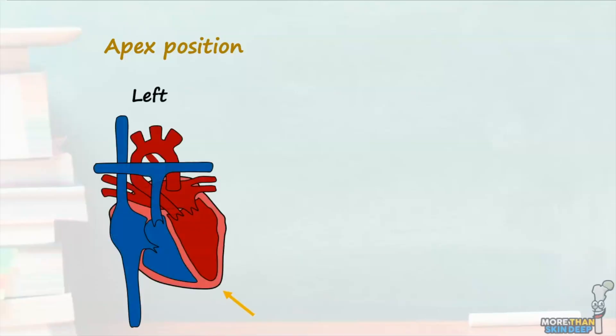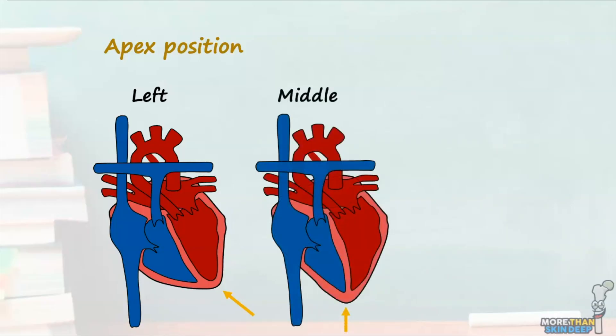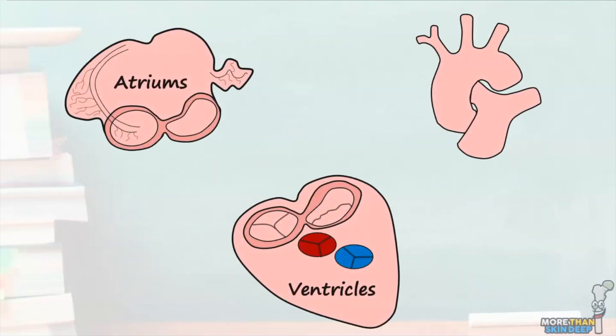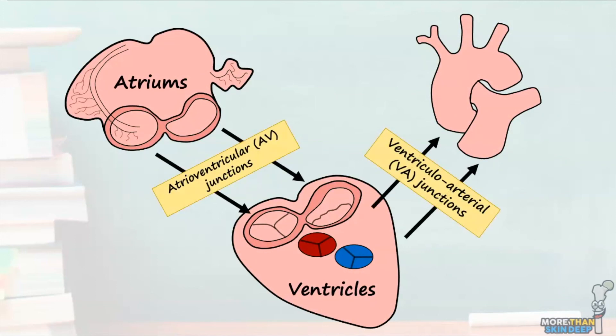The final point to consider to complete our morphological analysis of the heart is the position of the cardiac apex. The cardiac apex may be positioned to the left, which represents the normal and commonly observed arrangement; however the apex can also be orientated towards the midline or even towards the right. And that's everything there is to say about the morphology of the heart, the cardiac segments, as well as the atrioventricular and ventricular arterial junctions using sequential segmental analysis.